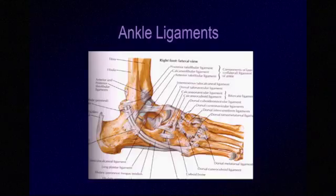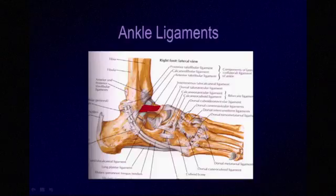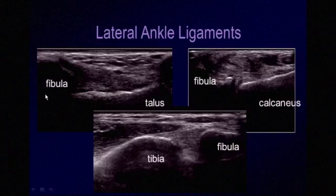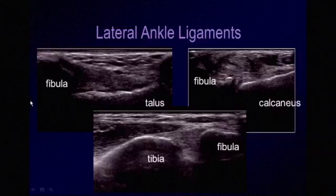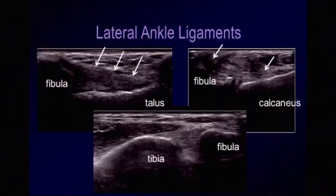Moving on to other causes of ankle pain, we look at the lateral ankle ligaments most commonly involved with ankle sprains: the anterior talofibular ligament in red, the calcaneofibular ligament in green — deep to the peroneal longus and brevis tendons — and the anterior tibiofibular ligament in blue. Ligaments are conveniently named after their bony attachment sites: the anterior talofibular ligament runs from talus to fibula, the calcaneofibular ligament from calcaneus to fibula, and the tibiofibular ligament bridges fibula to tibia.